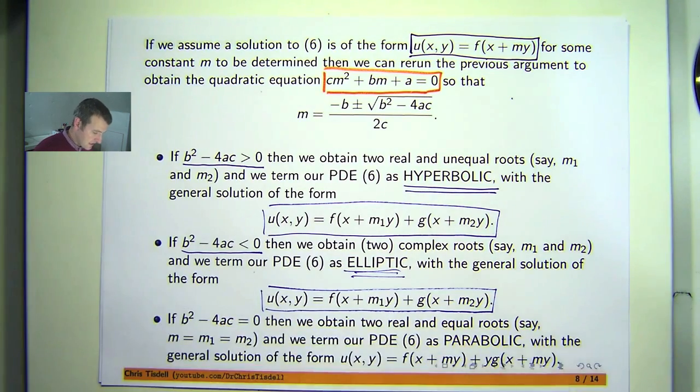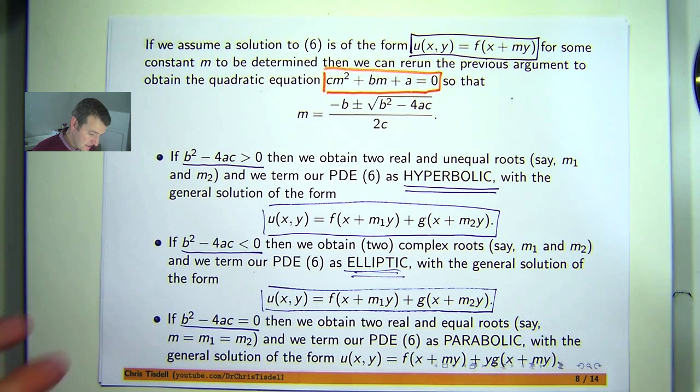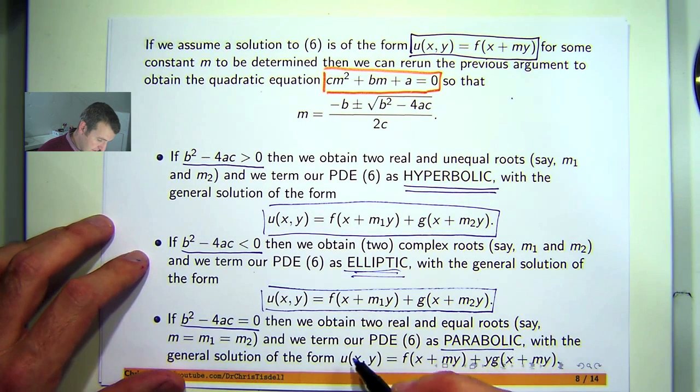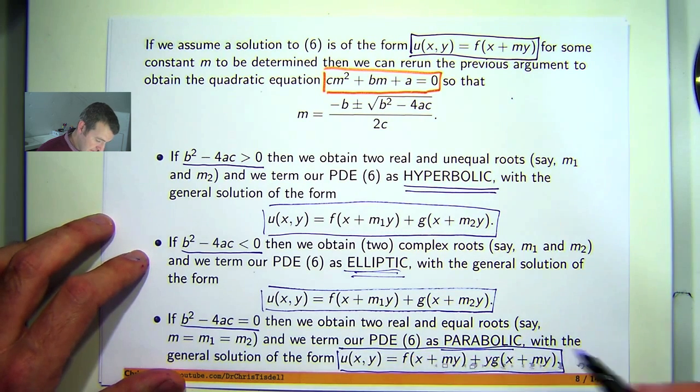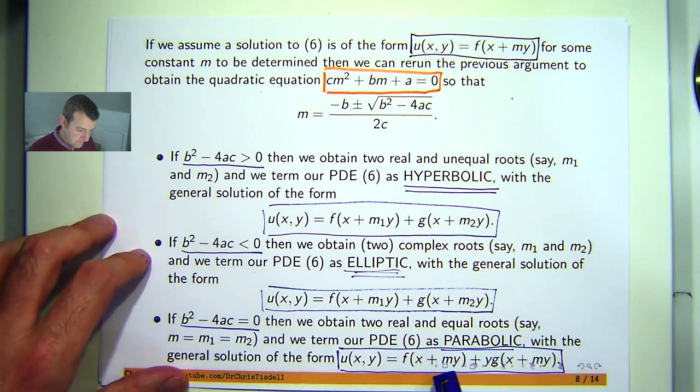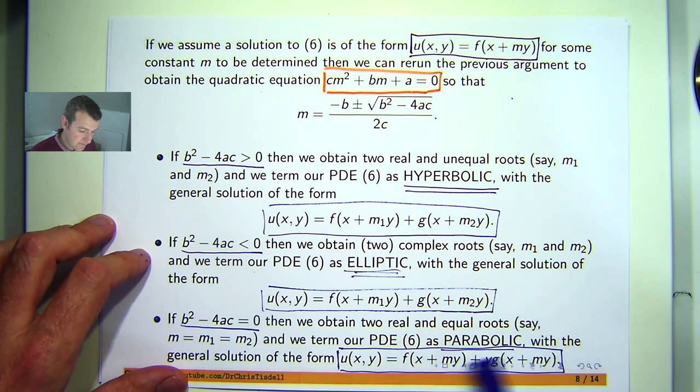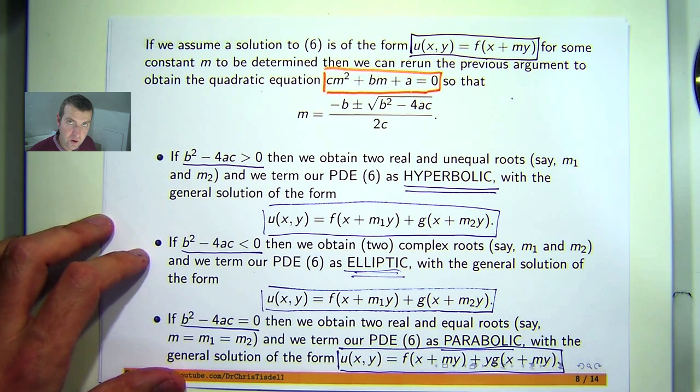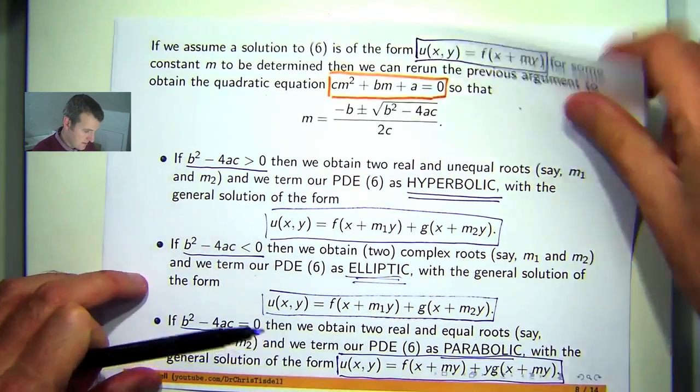And finally, if the discriminant is zero, then we obtain two real and equal roots. And our PDE is termed parabolic. And just notice the subtle change here. We've got the coefficients on the Y, and there's a Y out here now. So when it was Mx plus Y in here, the X was out the front. Now it's Y out the front. And the M's the coefficient of Y here.